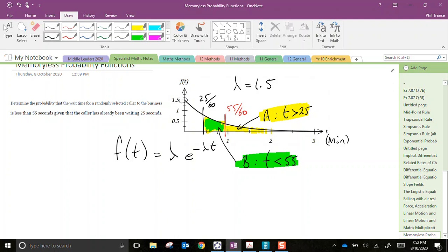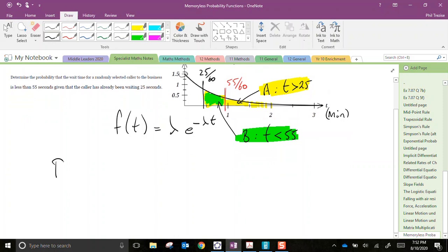Now, how will I write this as a mathematical statement? I'm looking for probability of successfully having event B occur on the condition that event A is given. So we've been told that they've been waiting for 25. This bit here doesn't exist in this question.